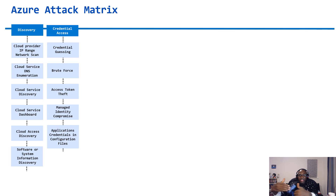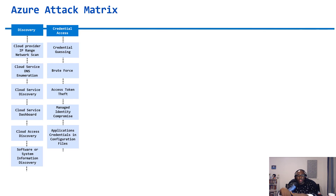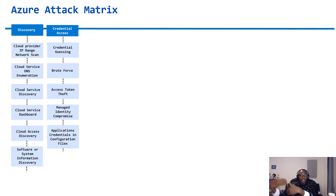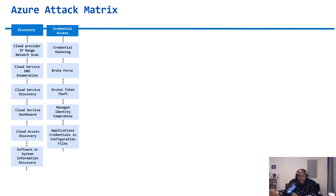Credential access is where an attacker looks to gain access to account information — usernames, passwords, or access tokens that have permissions in the victim's Azure environment. They could use methods like guessing credentials, credential dumping, or keylogging malware.